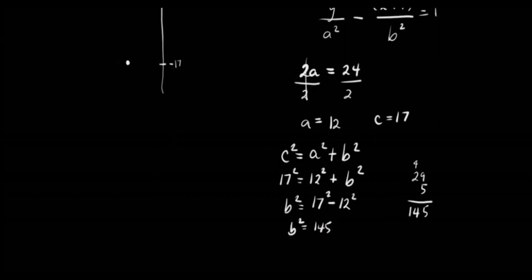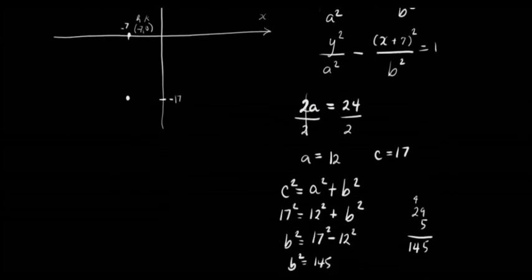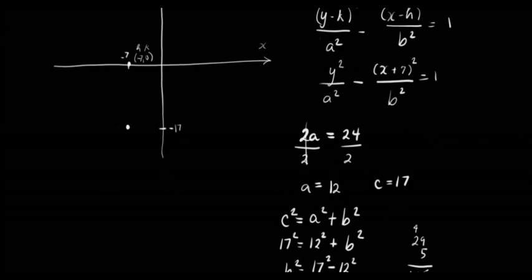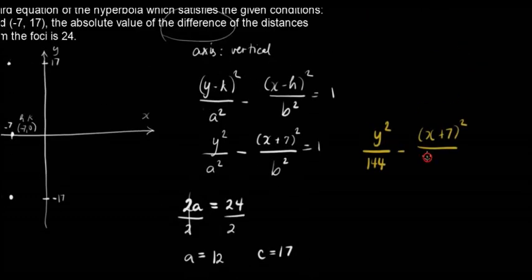We don't need to find b, we just need the equation. Therefore, our equation now becomes y²/144 - (x + 7)²/145 = 1.